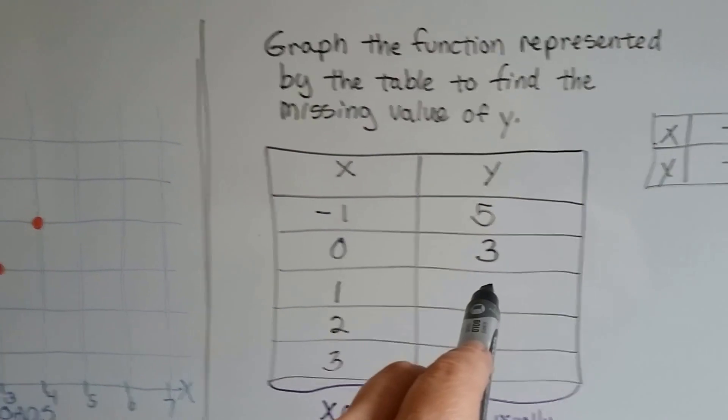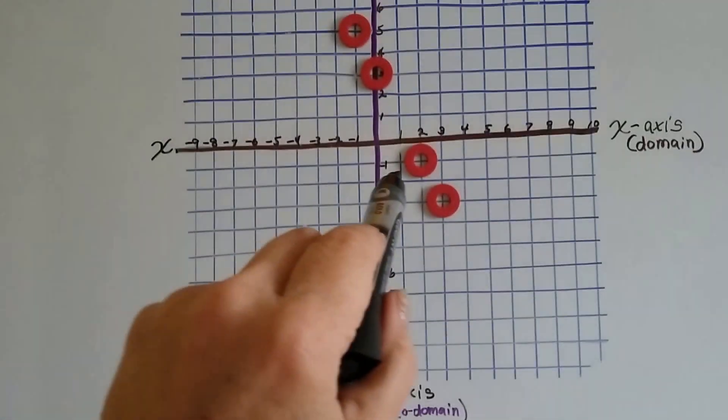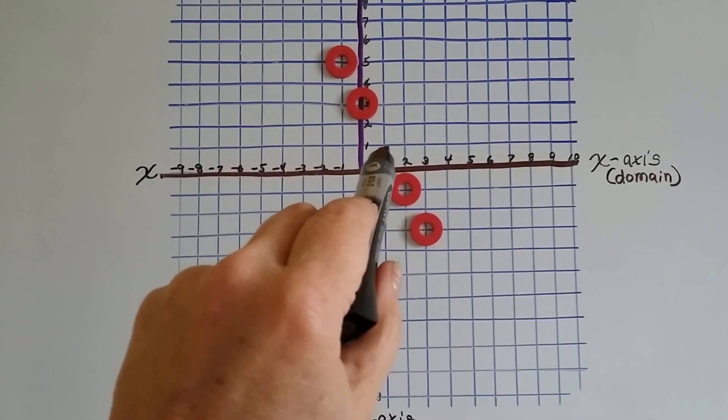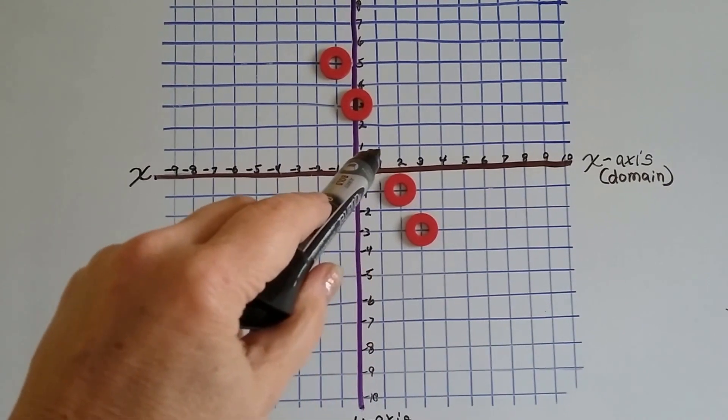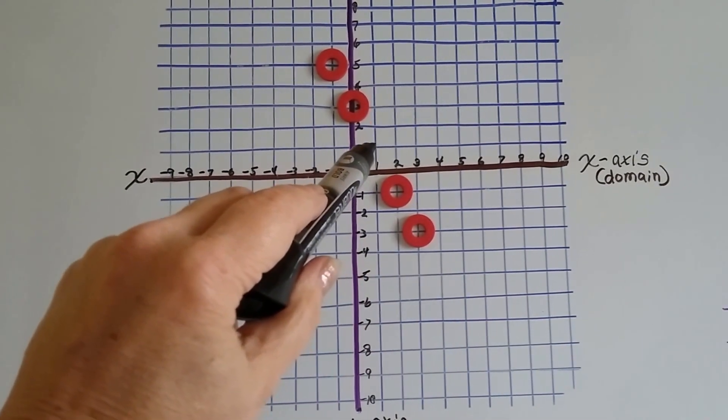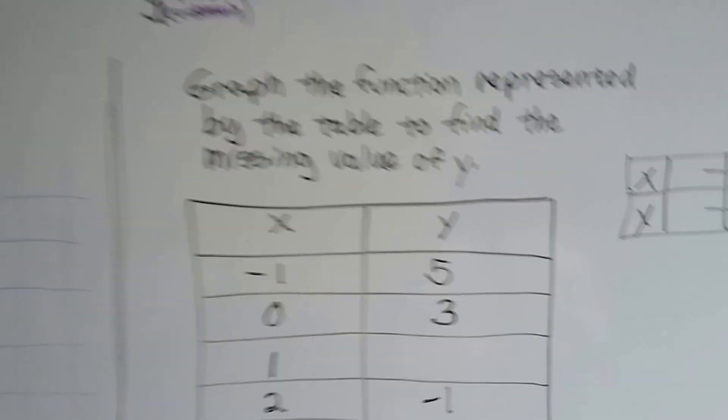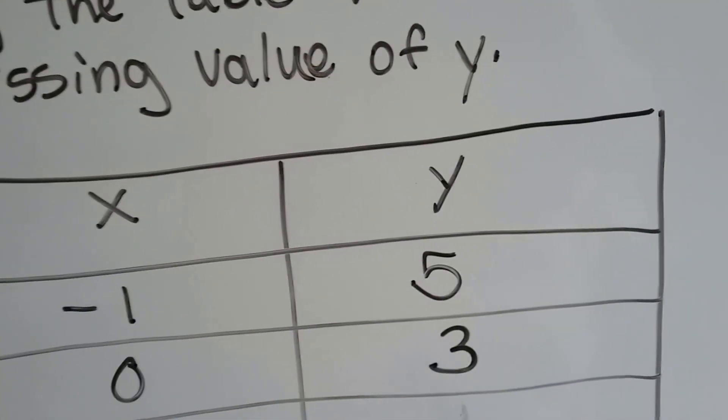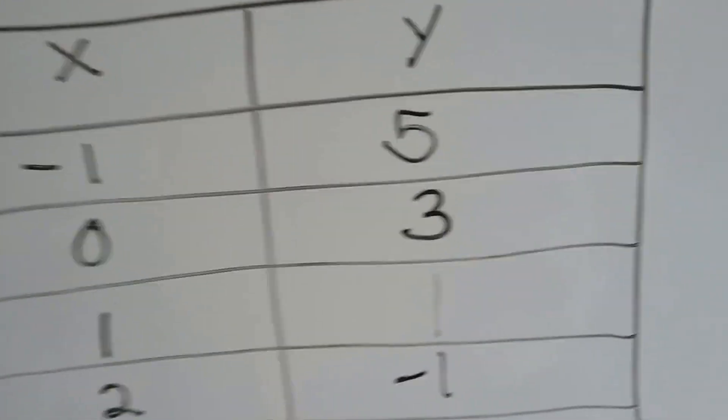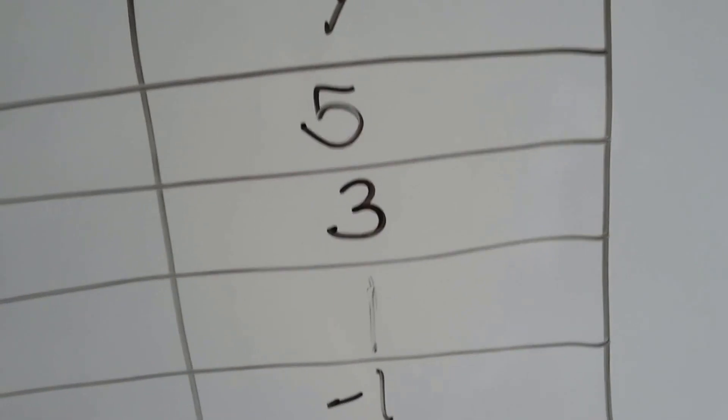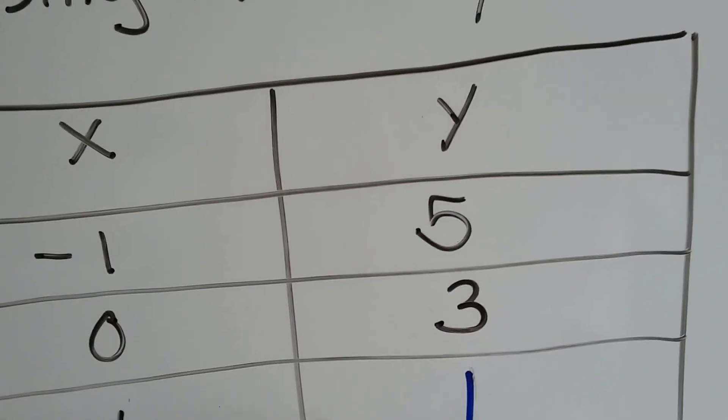And look what the graph says, 1 something. So if it was on x1, it would be 1, 1. It would be on y1 also. So we can fill this in and say the missing value, dried out marker, that happens. The missing value is a 1.